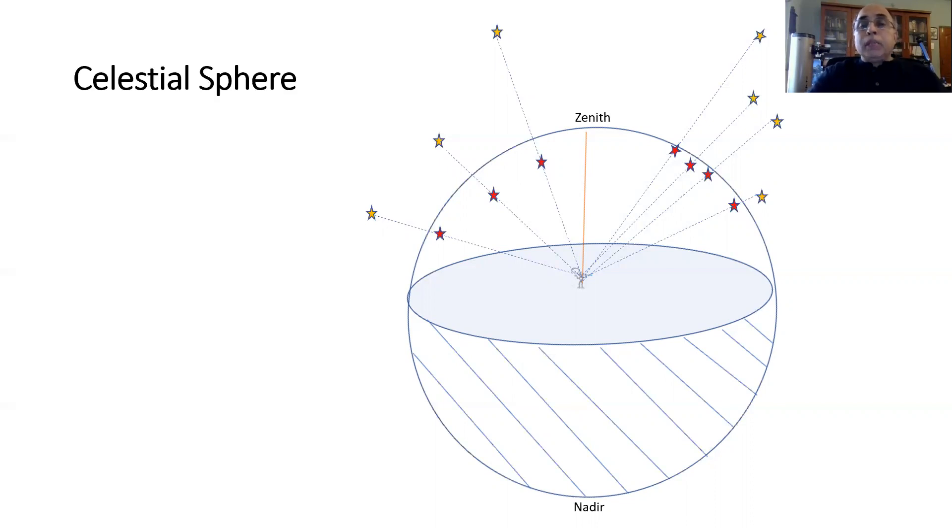In this picture we have an observer and around him he imagines a celestial sphere. We have these stars in yellow which are at varying distances from him, but he perceives as though they are all sitting on the hemispheric dome around him.